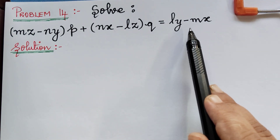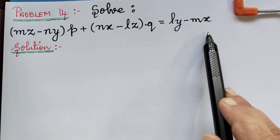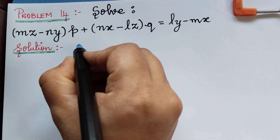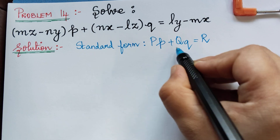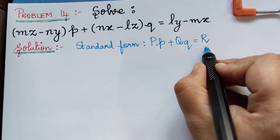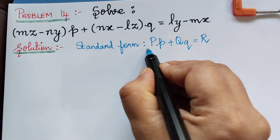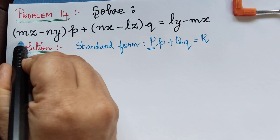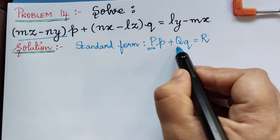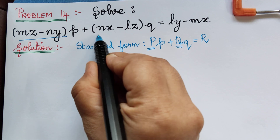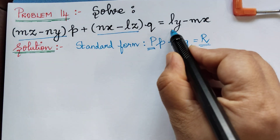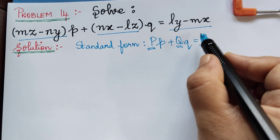So we compare with the standard form of Lagrange's type, which is given by capital P times p plus capital Q times q equals capital R. On comparing, we find that capital P equals mz minus ny, capital Q equals nx minus lz, and capital R equals ly minus mx.